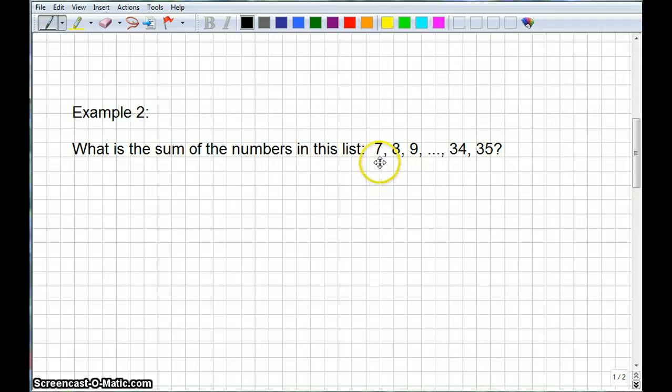Now, we can look at this just like we did before. If we add 7 plus 35, we get 42. If we add 8 plus 34, we get 42. This number would be 33. The number prior to 34 would be 33. And if we add 9 to 33, we get 42. So, again, we're going to get something that is a sum of a bunch of 42s. So, how many 42s do we have to add?